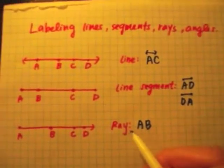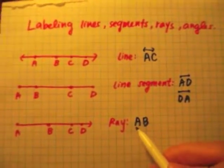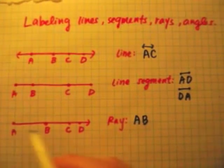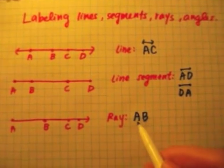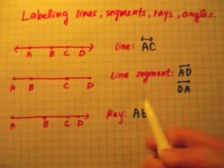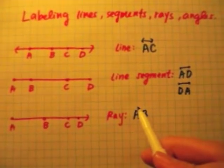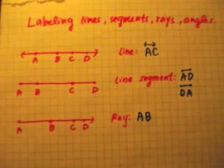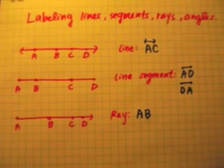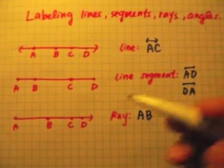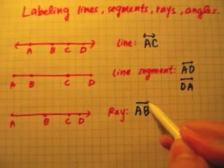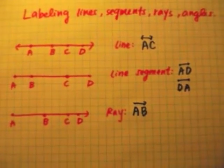I have to start with point A — that is my endpoint. To finish this label off, just like I did for the previous two examples, I need to draw a mini ray right on top. And there's my mini ray.